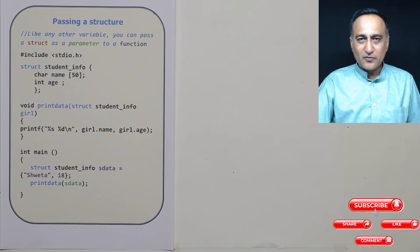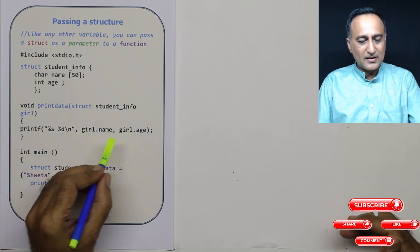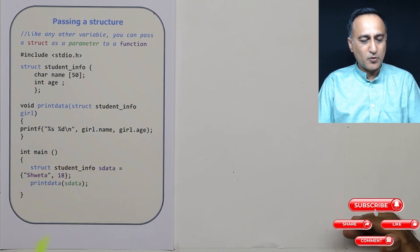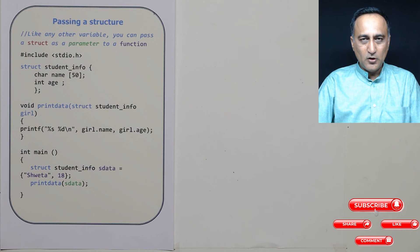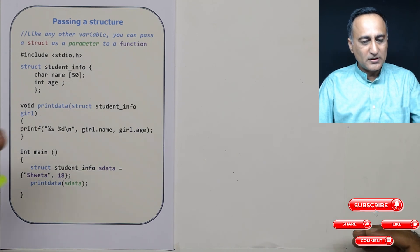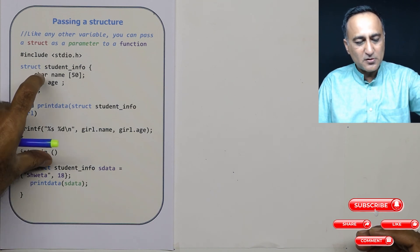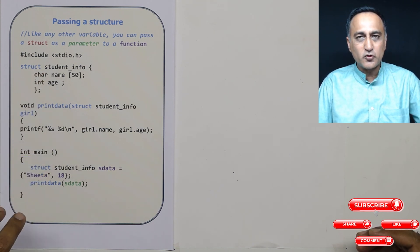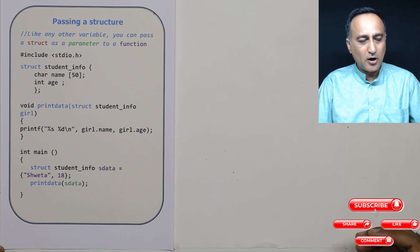So if you compile this code and run it, you're going to get girl.name and girl.age on the output screen. Be sure to watch the demo that follows this presentation, because I will be typing this code, executing it, and showing you how you get the output.